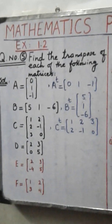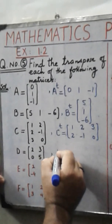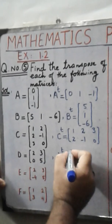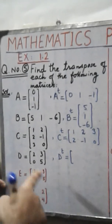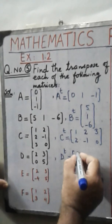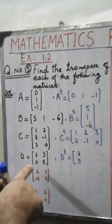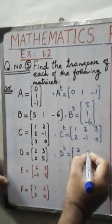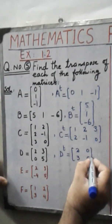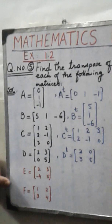In matrix D we interchange the rows into columns. In the first row the elements are 2, 3 — we write these in column form as 2, 3. Then the second row 0, 5 becomes the second column: 0, 5. So this is the transpose of matrix D.